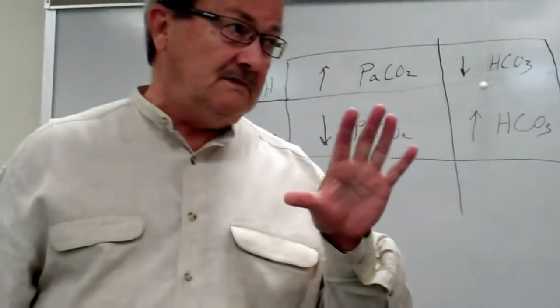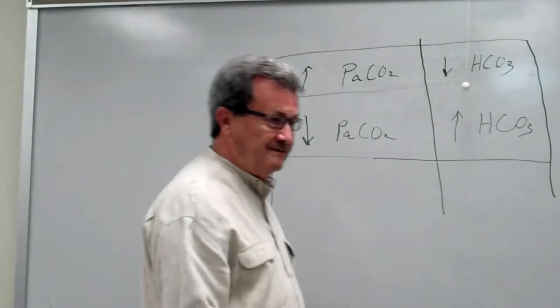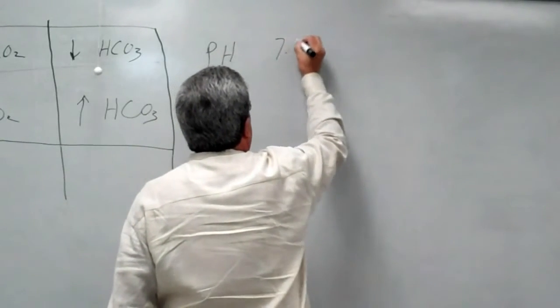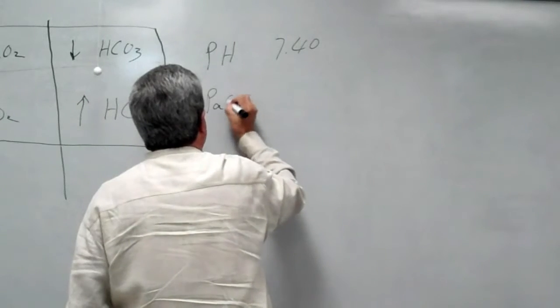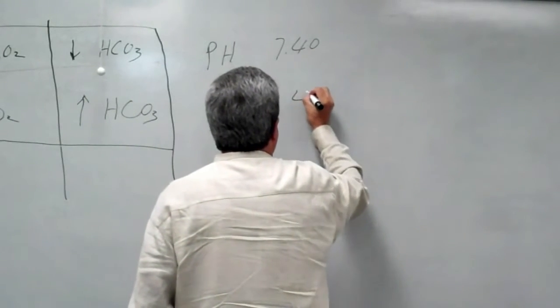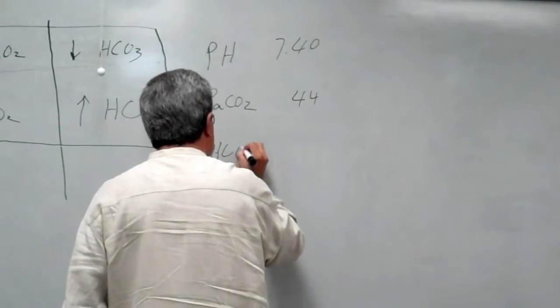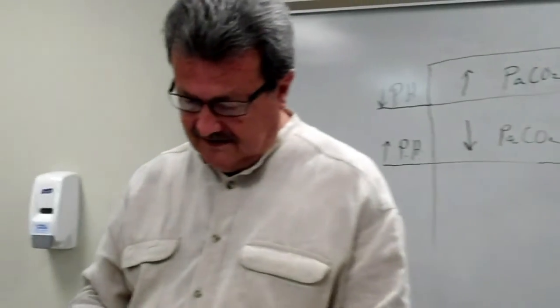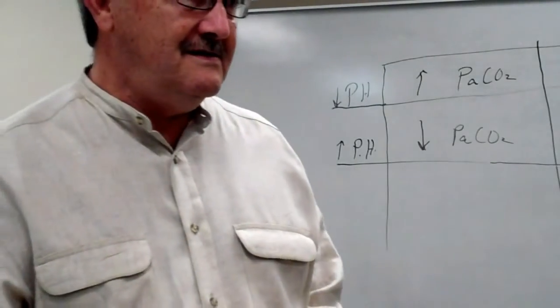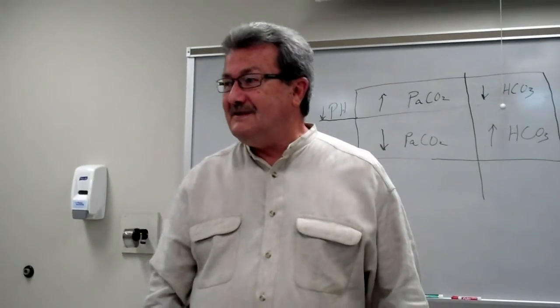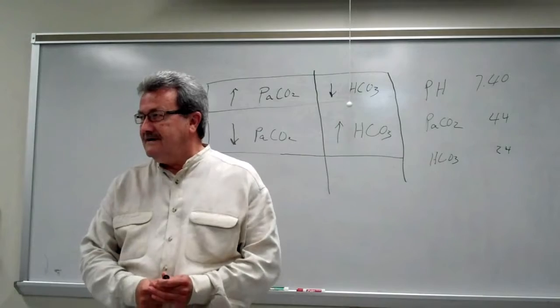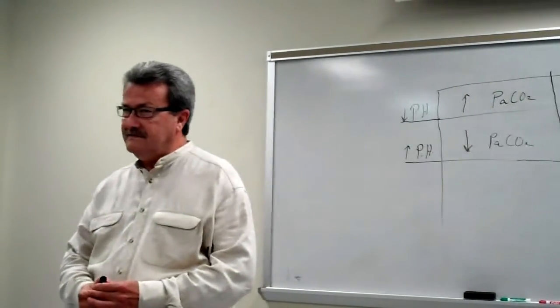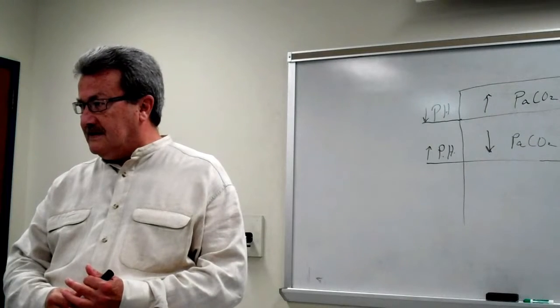We're going to look at some values. I'm just going to make these values up. I'm going to put pH is 7.40, the PaCO2 is 44, and the bicarb is 24. How would y'all interpret that? Nobody has an idea? Normal. What happens? The bicarb is absolutely normal at 24. What is the CO2? Elevated, isn't it?